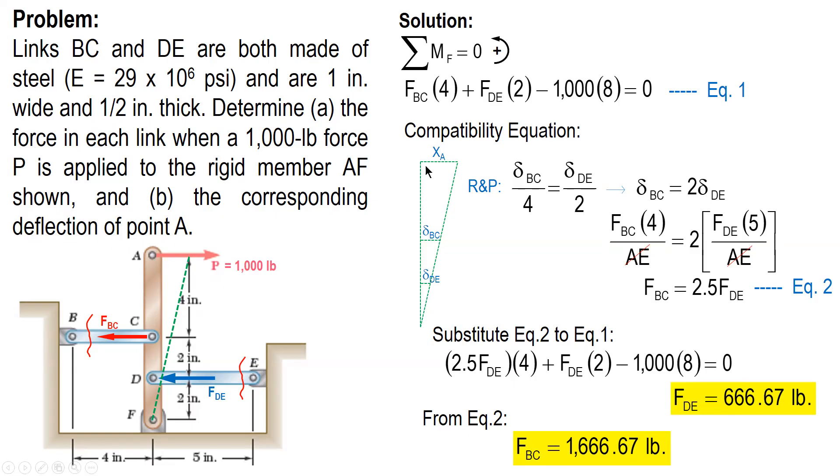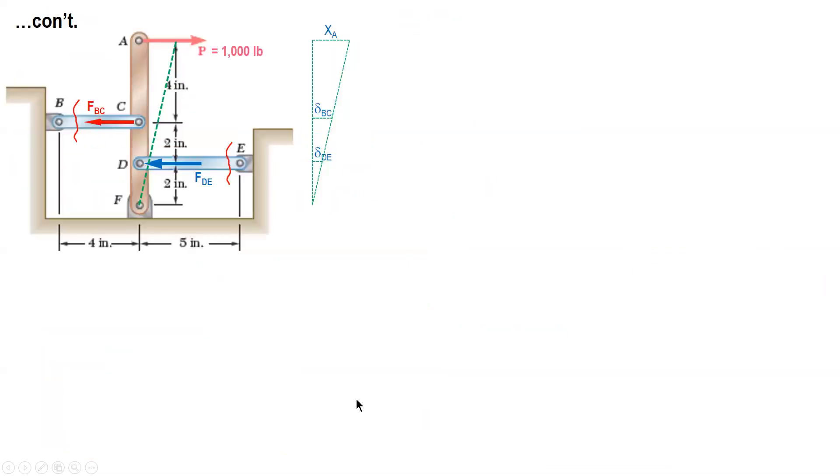For letter B, corresponding deflection of point A, we need the value of XA. We can solve for XA if we have the value of either delta BC or delta DE. Or we do ratio and proportion again, but we need one value of either FBC or delta BC and delta DE. We can solve any of them since we already have the value of the resisting forces.